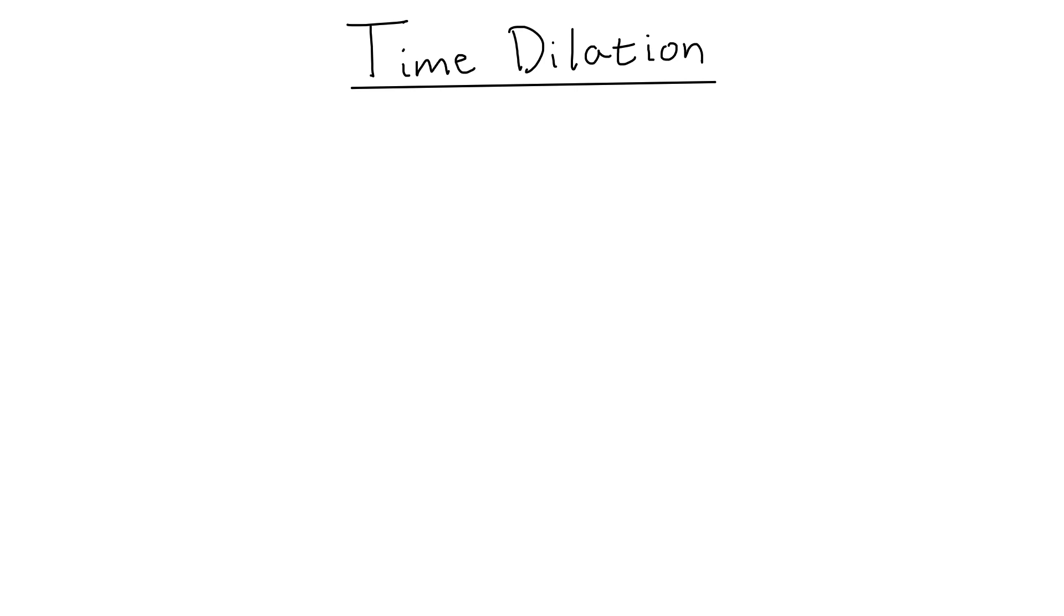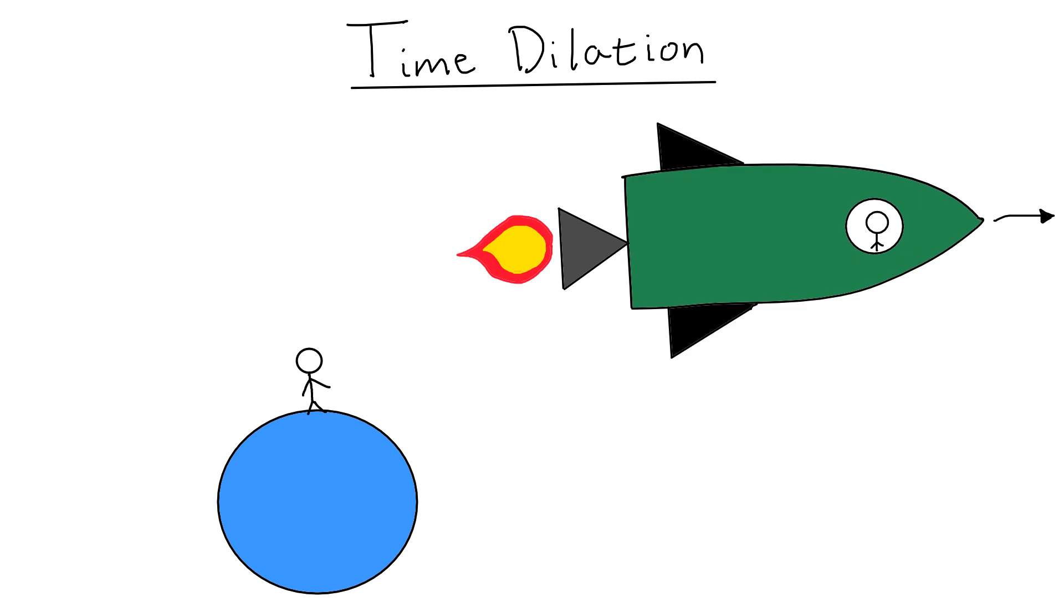The principle of time dilation states that if there are two observers and one is moving at a constant velocity relative to the other, the observer who is moving will age slower than the stationary observer.